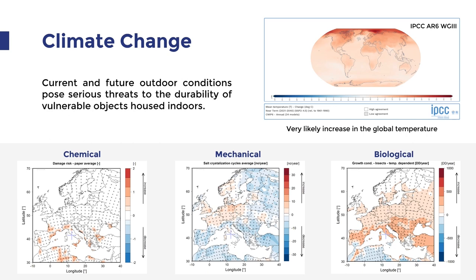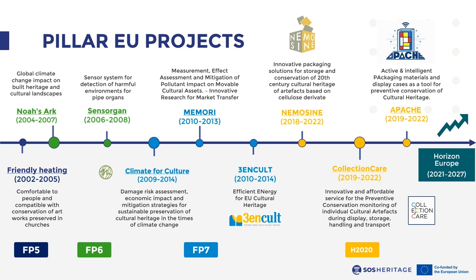I wish to conclude this introduction by giving an overview of the pillar European projects that dramatically contributed to research in the field. The European framework programs have over the last decades financed projects focused on the conservation of cultural heritage. In particular, Noah's Ark and Climate for Culture projects established the common framework for assessing the impact of climate change on built heritage and collections inside historical buildings. SEDSAM and Memori investigated the chemical risk for conservation due to pollutants and harmful environments, while NemoSign and Apache projects were devoted to packaging solutions for the preventive conservation of heritage objects. Finally, the Collection Care project implemented an affordable monitoring service for cultural artifacts in small and medium-sized museums during display, storage, and transport. Further research will be funded in the coming years thanks to the latest framework program, Horizon Europe.